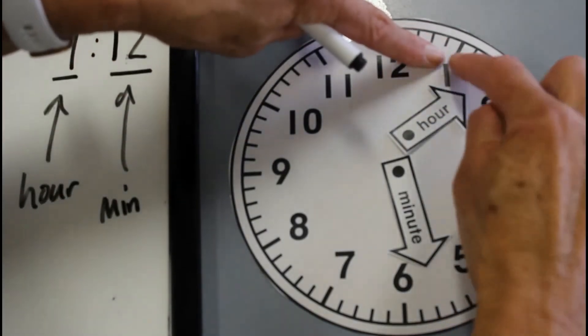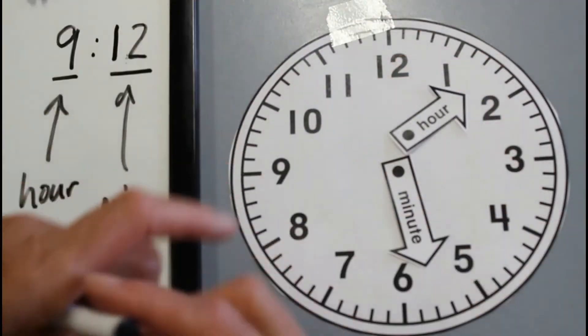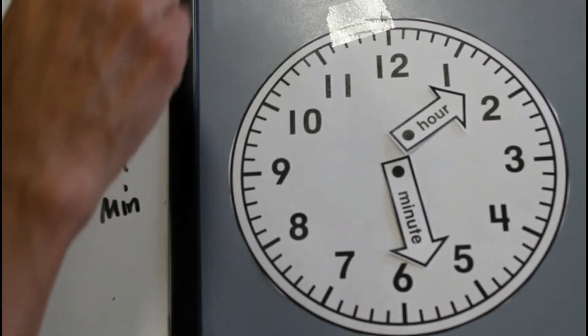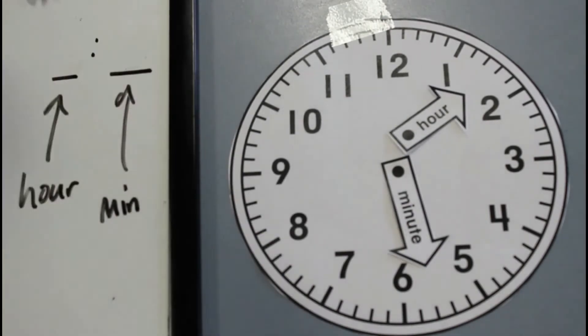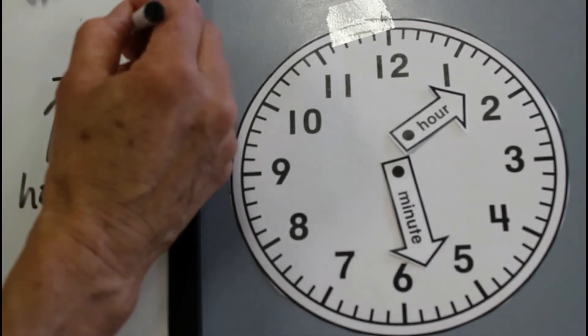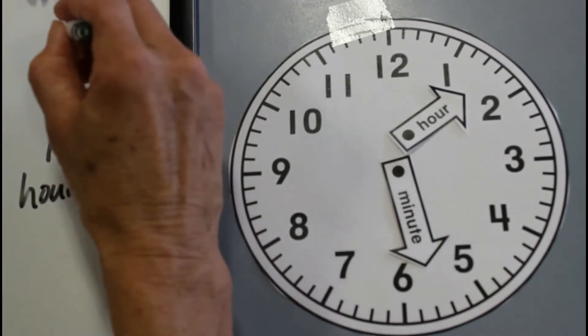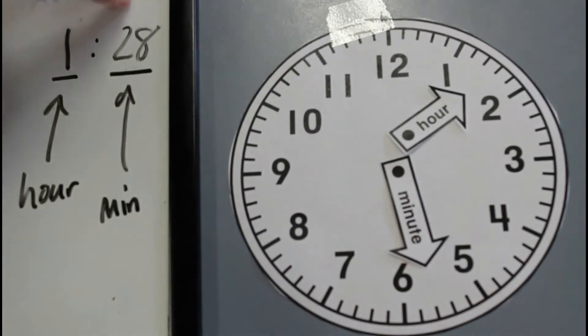So the hour hand is almost halfway between the one and the two. That's twenty-eight minutes past one. How we would write that is, I'm going to do the minutes first. Twenty-eight minutes past one o'clock. So the hour, the minutes.